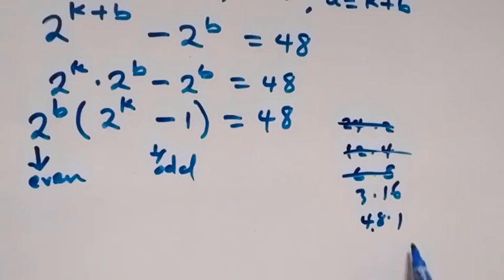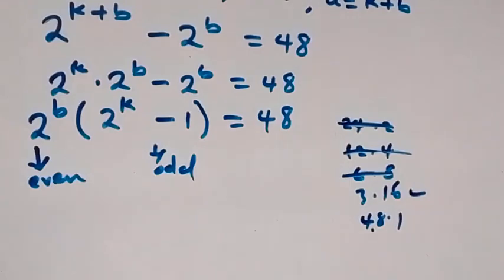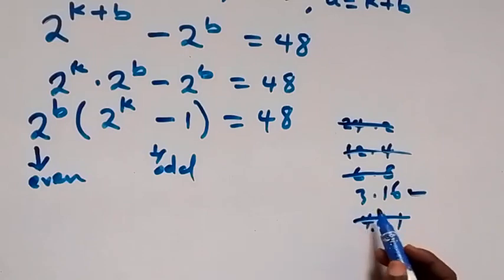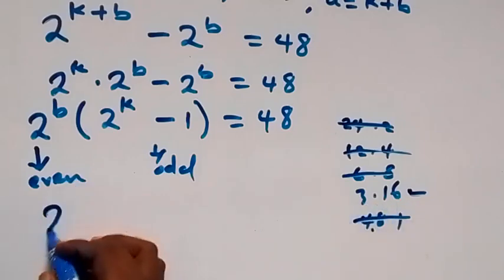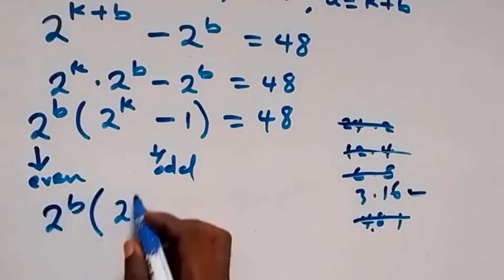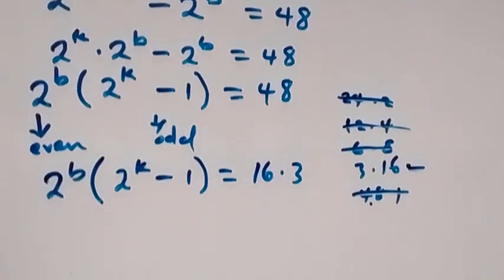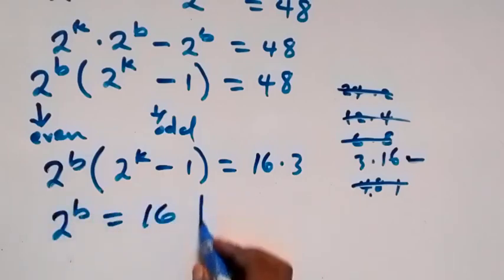The only valid factorization where one factor is odd and the other is even is 3 times 16, which gives us the desired solution. So we write: 2 raised to power b times (2 raised to power k minus 1) equals 16 times 3, that is 48.